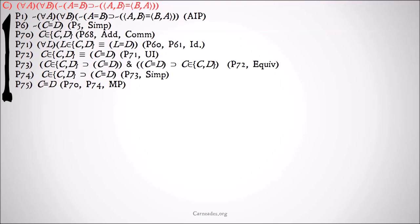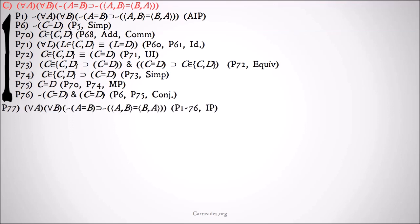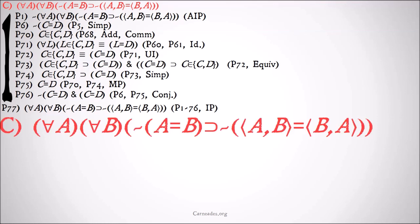This, once again, contradicts our earlier statement that it's not the case that C equals D. And so, through conjunction, we have a contradiction that allows us to finally jump out of our big long 76-line indirect proof to show that for all A and all B, it's not the case that if A equals B, then it's not the case that AB equals BA. Our ordered pair theorem. Whew! That was a lot.